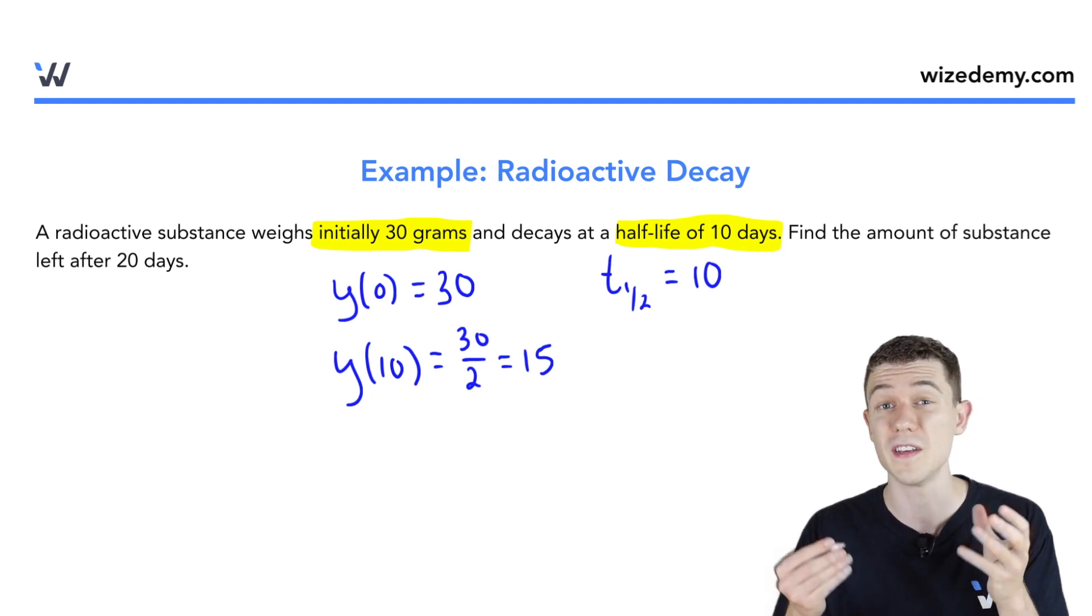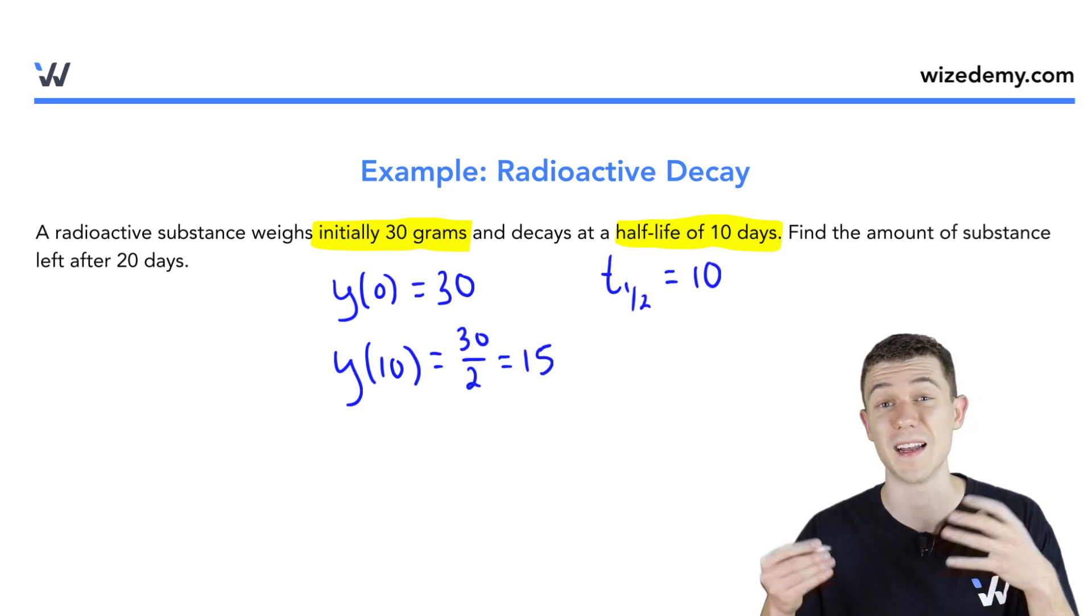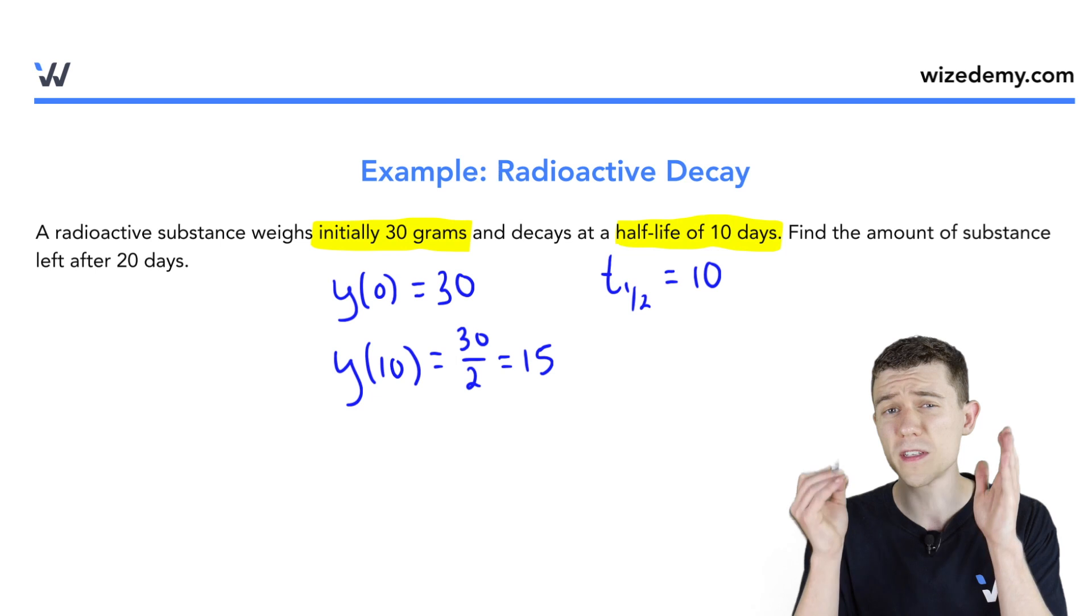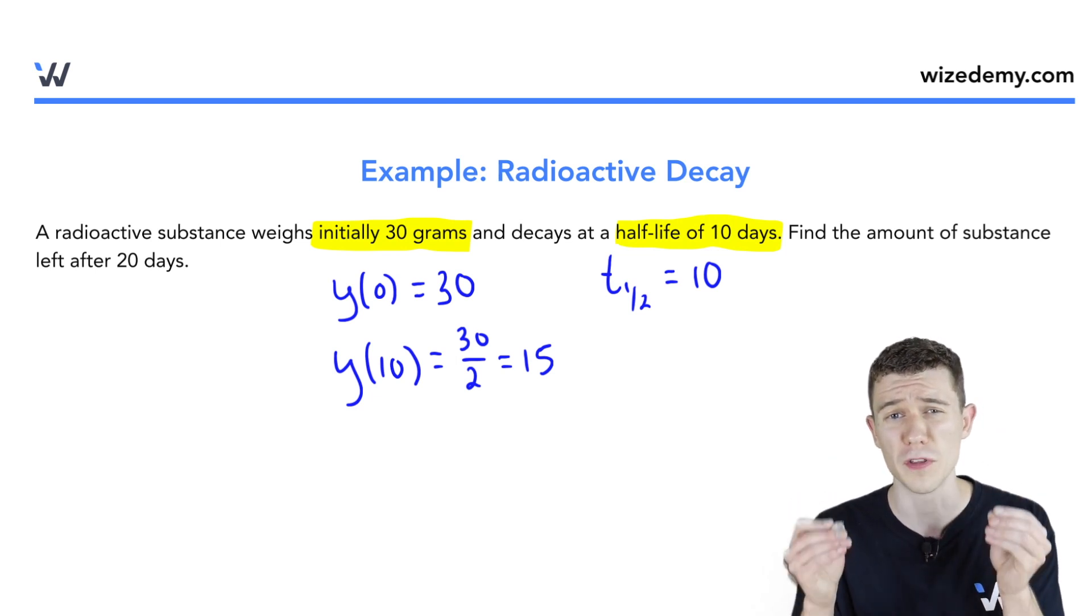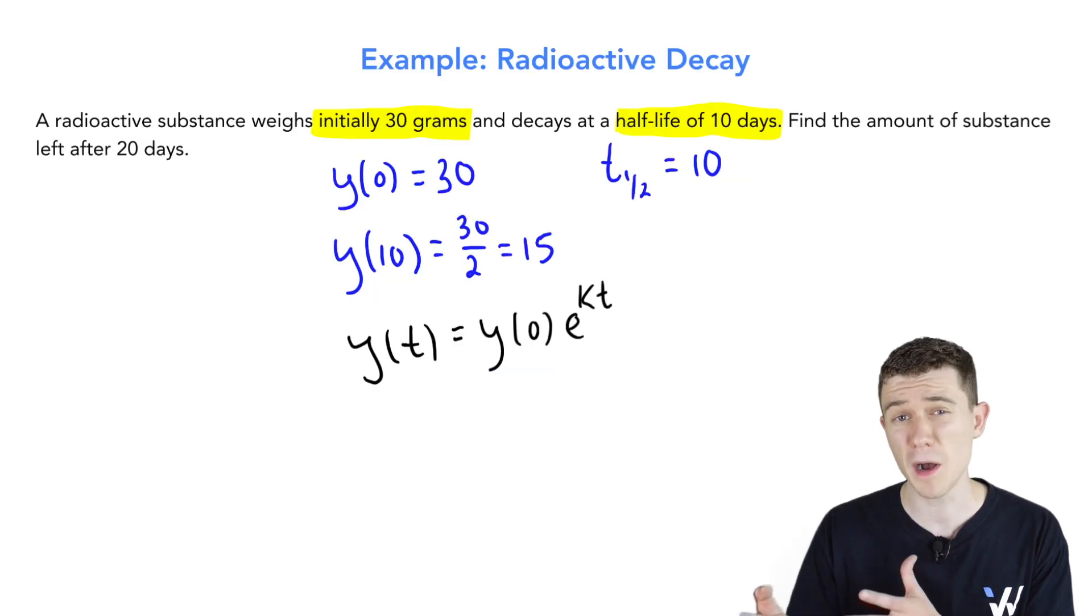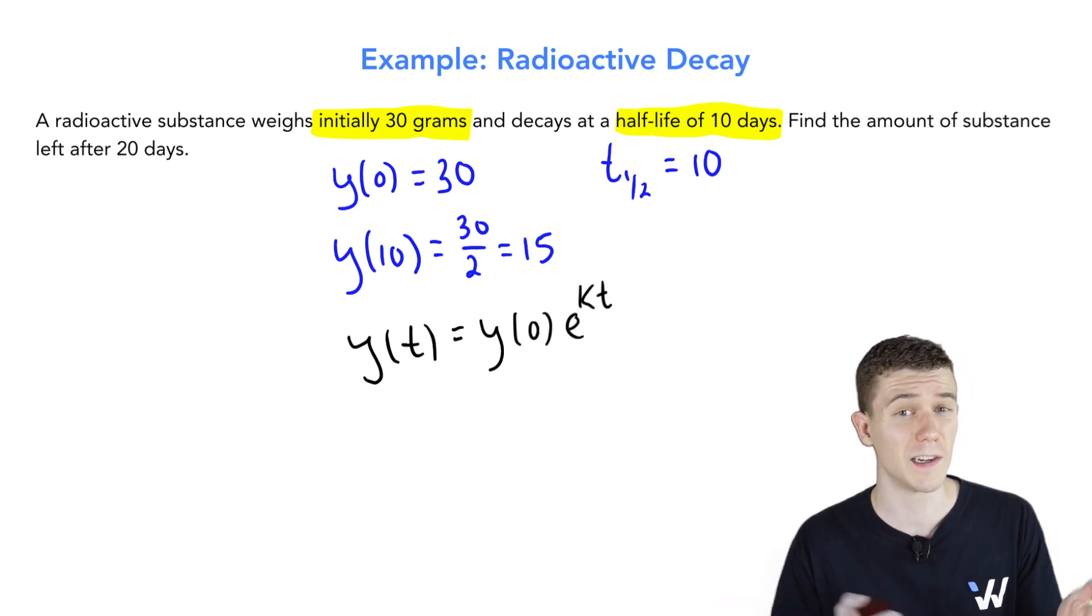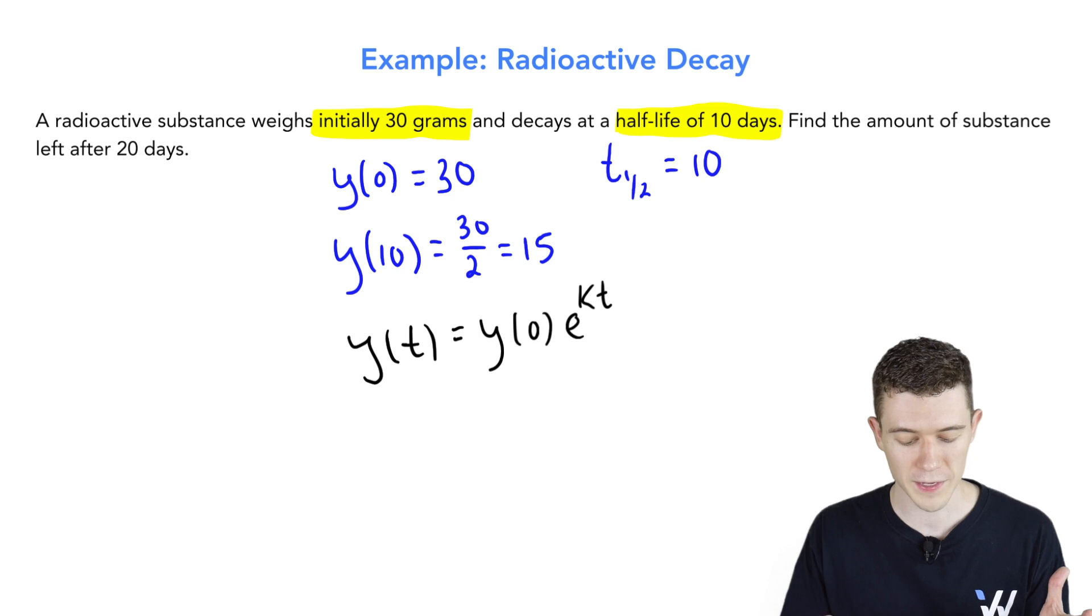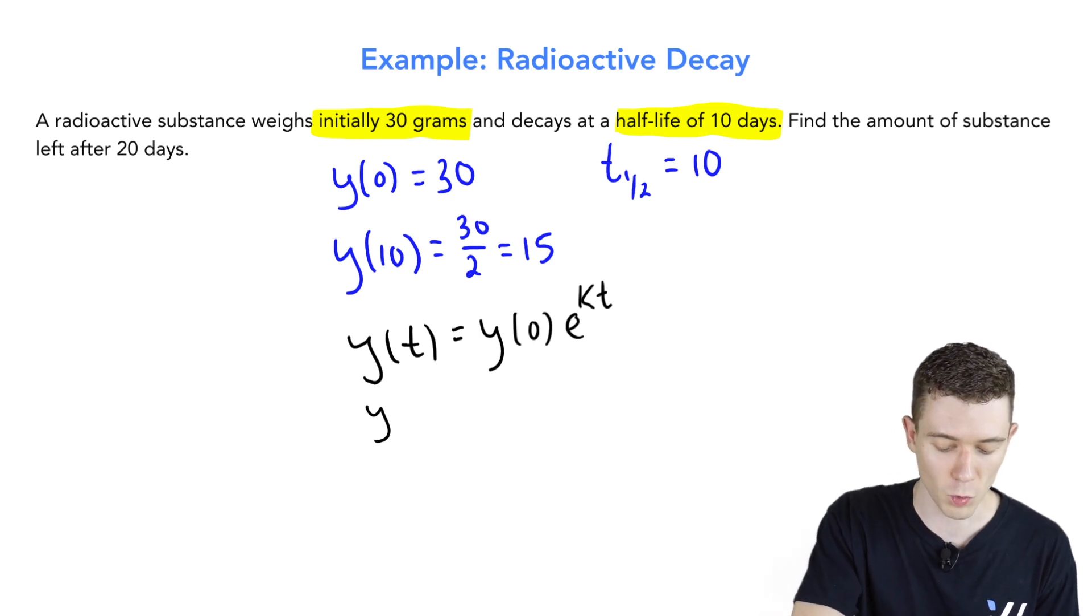We can use this information to write the equation for the amount of substance at any time t. Remember the solution to the exponential growth and decay differential equation. The solution is y(t) = y(0)e^(kt). K positive means we're growing, K negative means we're decaying. We're going to see a negative k value here shortly. Let's fill this in. Right off the bat, we know what y(0) is. Y initial was given to be 30. e^(kt).